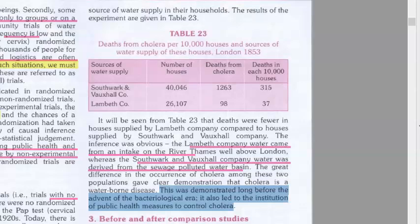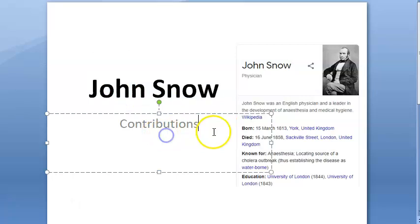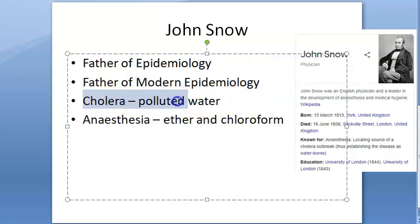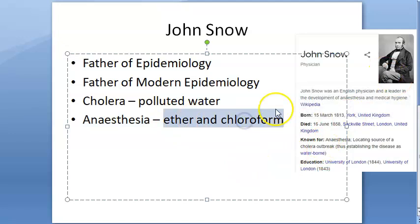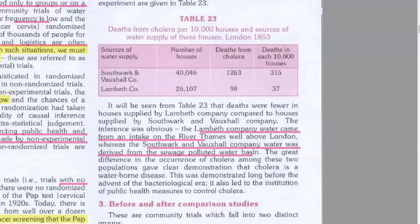This came even before bacteriology and established public health control measures to control cholera. In summary, John Snow was a physician from London, United Kingdom — the father of modern epidemiology. He proved cholera is a waterborne disease, created the famous spot map, identified the Broad Street hand pump, and contributed to anesthesia with dosage calculations for ether and chloroform. For exam purposes, focus on the cholera work: the spot map, the hand pump, and the water supply table.